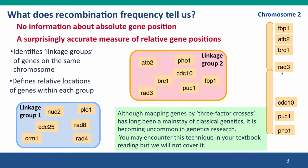In the previous lecture, we used the recombination frequency of two genes to measure the distance between them. But in order to position genes on a chromosome relative to more than two genes, it's necessary to do what are called three-factor crosses, so that you can tell which gene is in the middle and get them all in the right order. Mapping genes by three-factor crosses has been a mainstay of classical genetics, both in the laboratory and in textbooks. But it's now becoming uncommon as DNA sequencing and bioinformatics analysis become much cheaper and more powerful, so we're not going to cover three-factor crosses in this course.